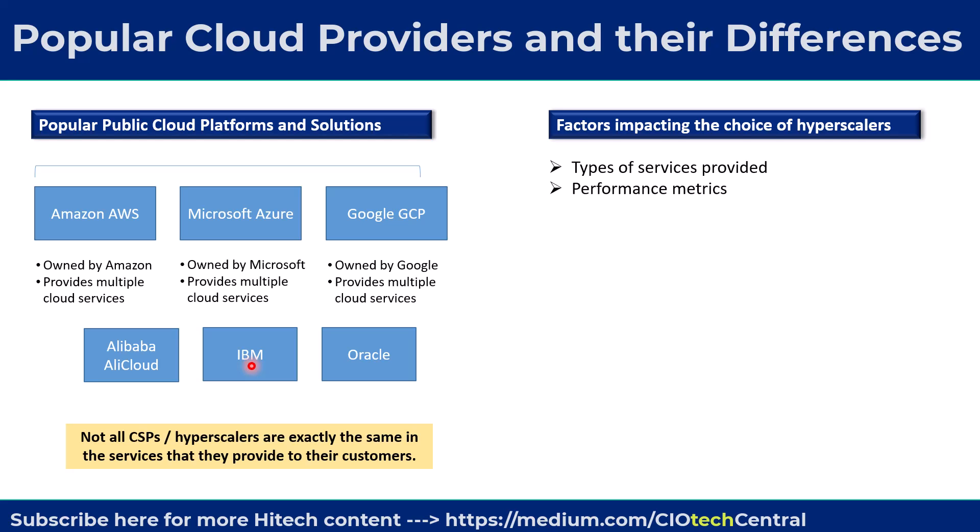Not all CSPs can commit to the same performance metrics and service level agreements. That may differ based on their internal capabilities. So, an organization's choice of a specific CSP would depend on the services needed and any specific business requirements regarding the level of performance they may require from the cloud provider.